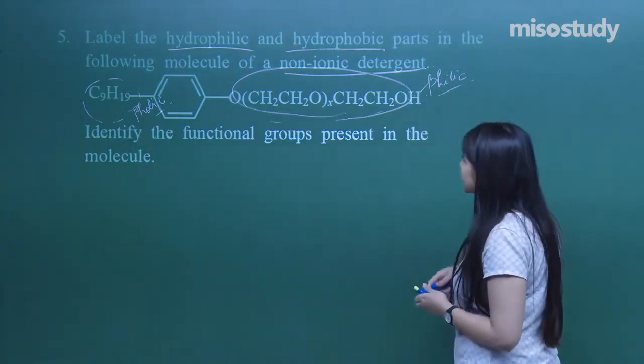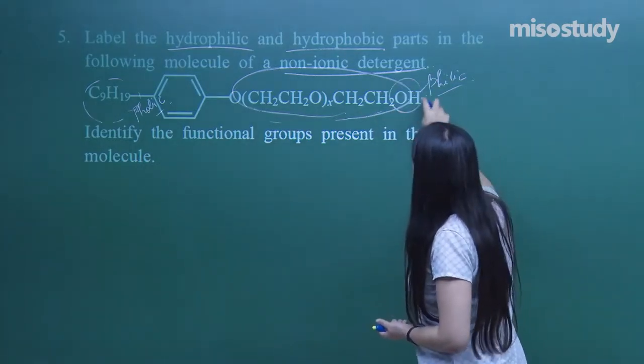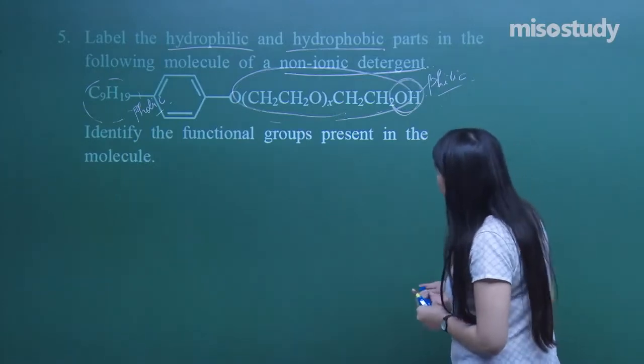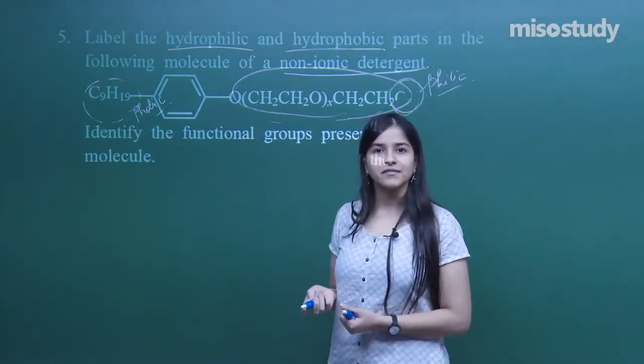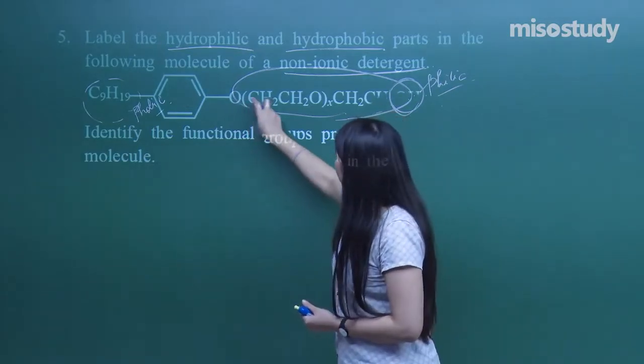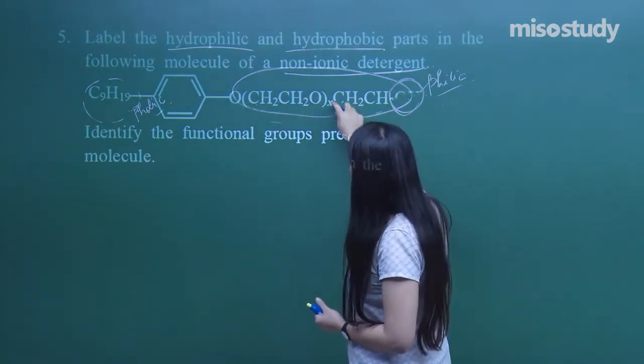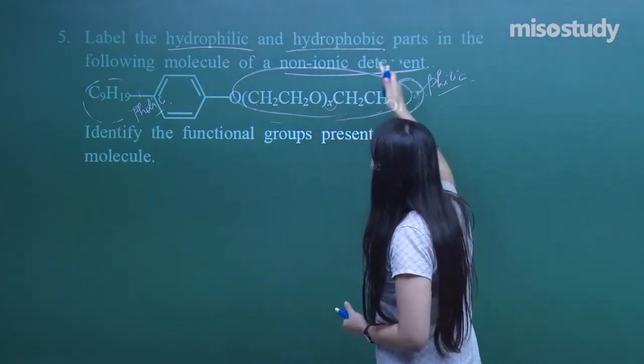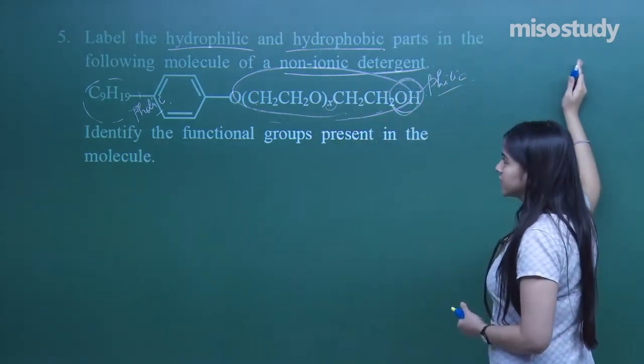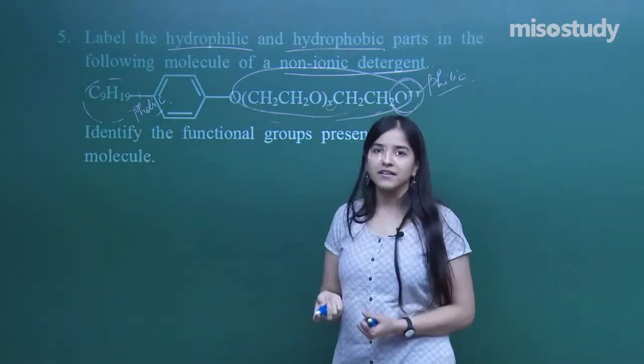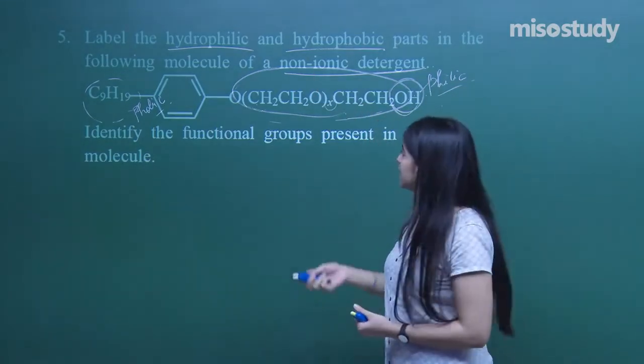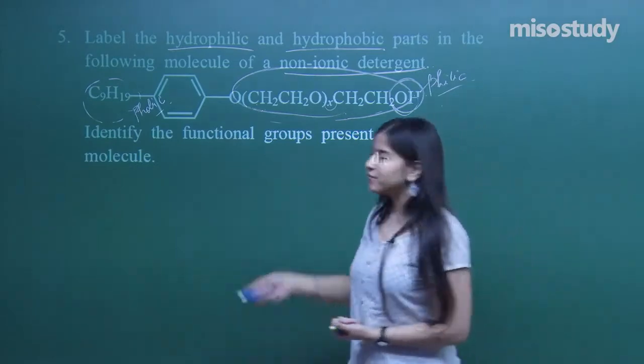The functional groups present in the molecule: one of them is OH, another is ether. O and then CH2CH2O, so many units will be present. So it's ether linkage and nothing else.